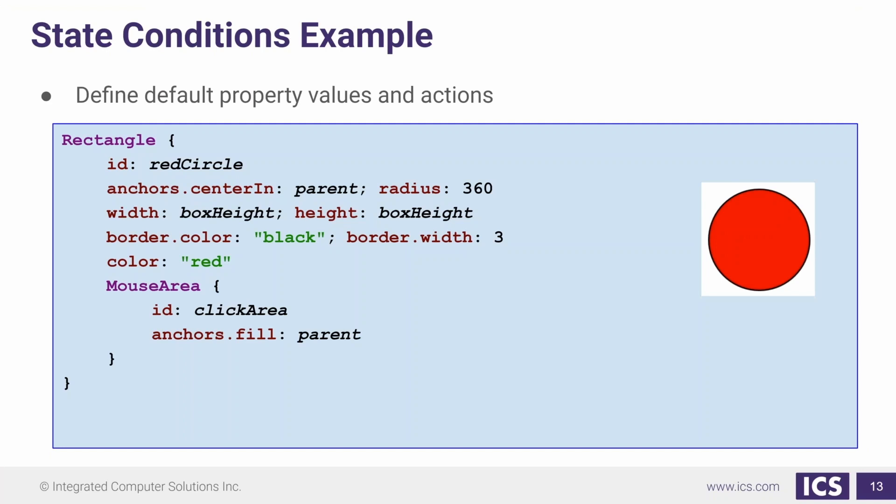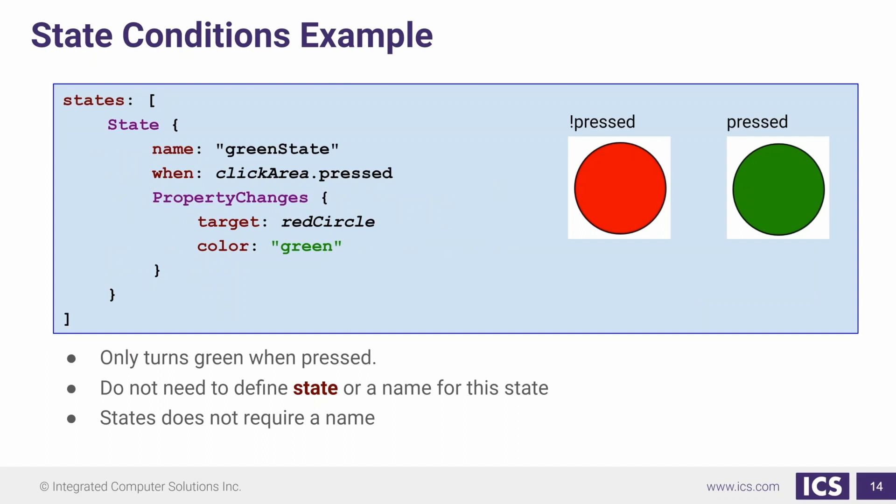Just to reiterate, here's an example of setting up the state condition for when. We're going to make our item. We're going to give it a mouse area inside of it. Then we're going to define a state. The state, we are going to set a when property. In this case, when our clicked area is pressed. And then we're going to set our property changes. For us, we want to make our circle green. So in this example, we would just target the red circle and set its color to green. Just like in the example code that we ran, when we release it, the color is going to go right back to what the default color property was.